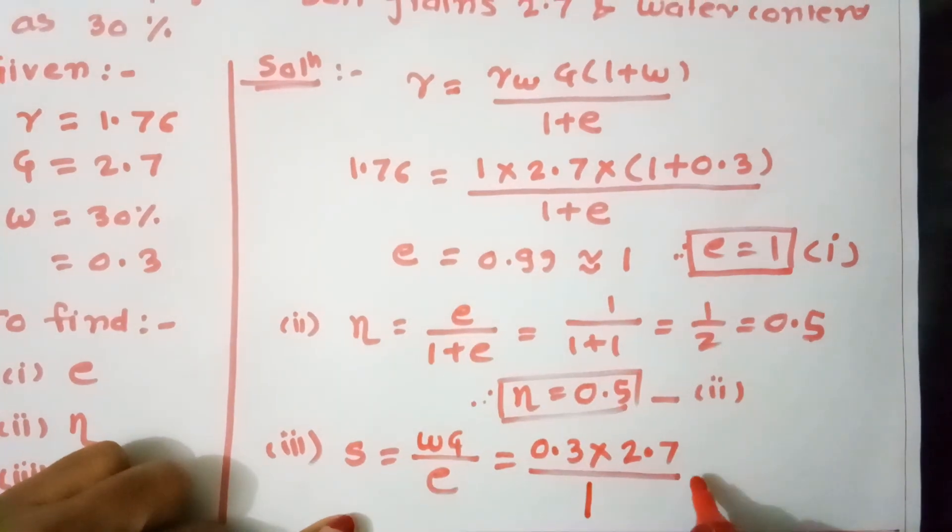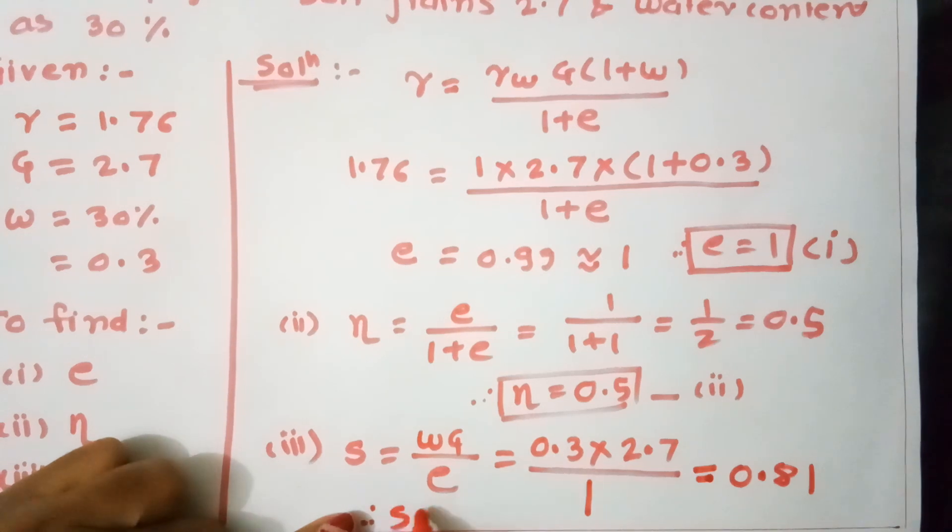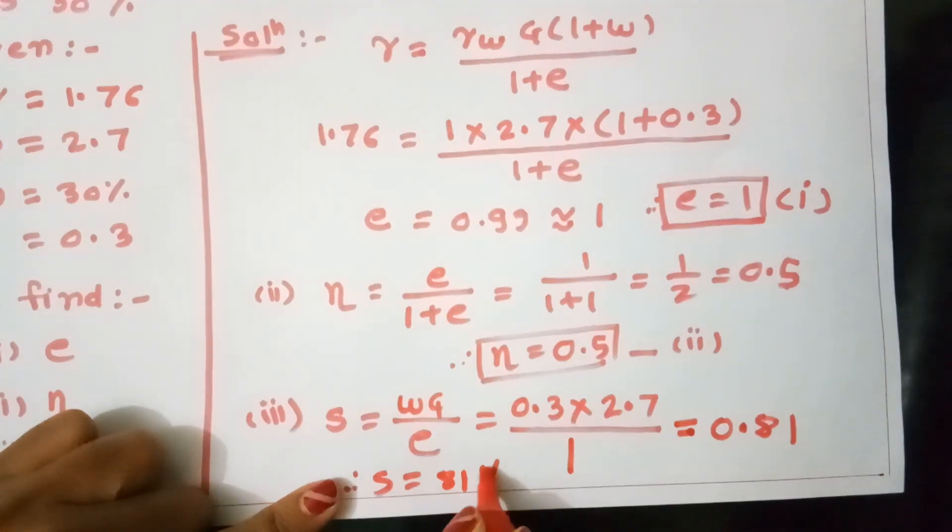Calculating: S = (0.3 × 2.7)/1 = 0.81. Therefore S = 81 percent. Degree of saturation is 81 percent.